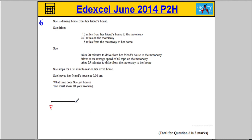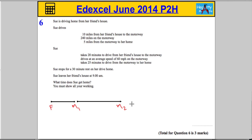She's driving to the motorway, so this point here is going to be the motorway — I'm going to call it M. She's going to drive along the motorway for 240 miles to get to her home. So there's another stage. This is the beginning of the motorway — call this M1, the start. And then she's going to drive along that motorway until she gets to the end, which I'll call M2.